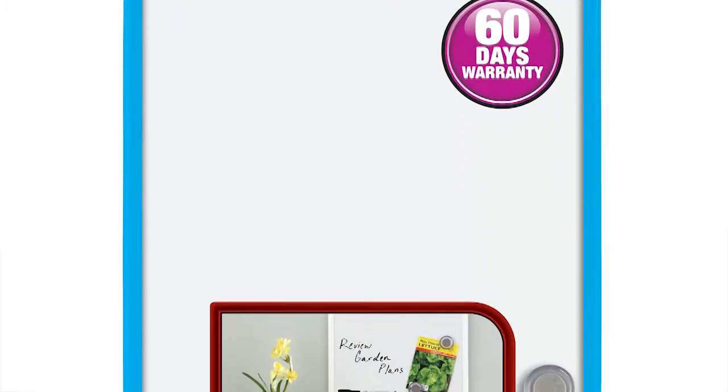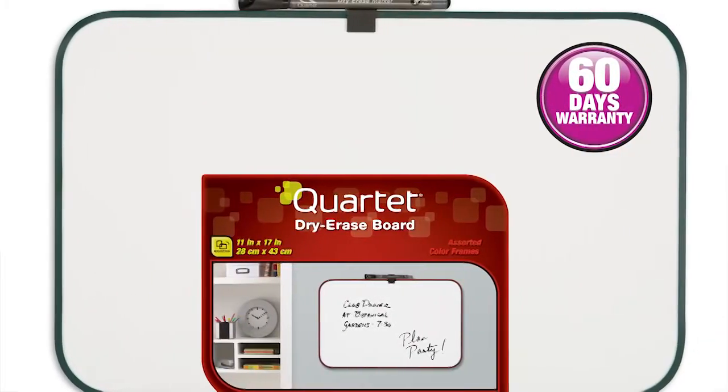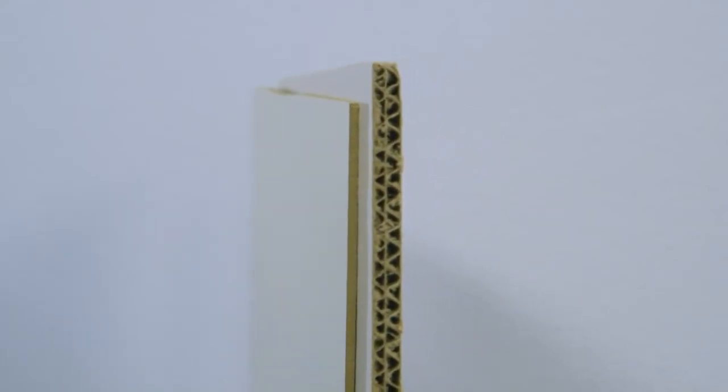We start with the most basic of whiteboards. These can be found in retail stores, and they are intended for home use. These are generally inexpensive and come in a magnetic and coated paper surface mounted to cardboard.